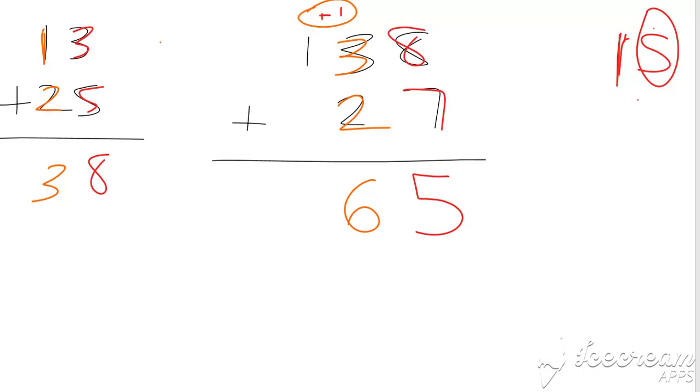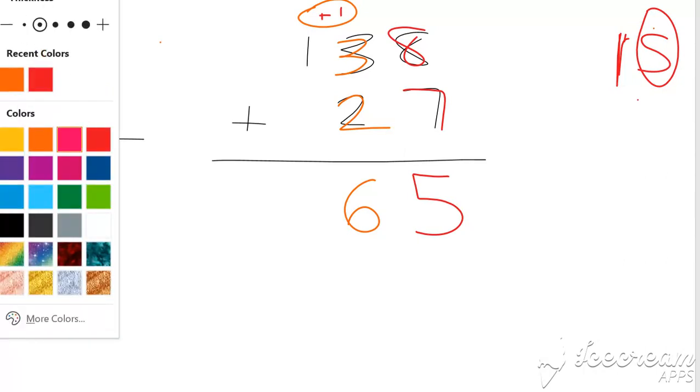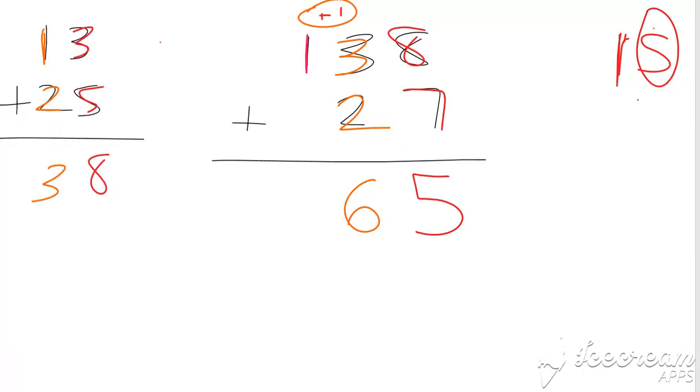Then we go to the third column. And you'll notice in this column, we only have something in the top row and we don't have anything underneath. So what we're going to do is just put the 1 there. There's nothing for it to add with.